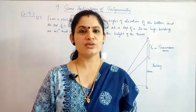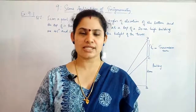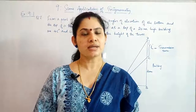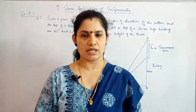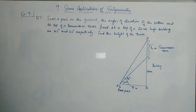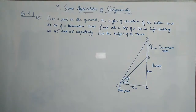Hello everyone. Today we will be doing the remaining problems of Exercise 9.1 of Chapter 9, which is Some Applications of Trigonometry. The question number from where we are starting is Question 7: From a point on the ground, the angles of elevation of the bottom and the top of a transmission tower fixed at the top of a 20-meter high building are 45 degrees and 60 degrees respectively. Find the height of the tower.